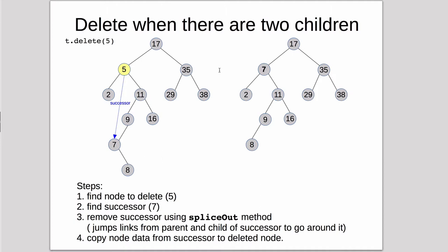So once you do that, you'll have a tree like this, where the node we're going to delete, the data and the value are replaced by the node that was 7. So basically the steps is to find the node to delete, find the successor, which is node 7, remove the successor, we're going to use a special method for that.